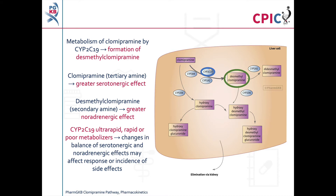In CYP2C19 ultra-rapid, rapid, or poor metabolisers, there can be changes in the balance of serotonergic and noradrenergic effects, with greater noradrenergic effects in ultra-rapid and rapid metabolisers, and greater serotonergic effects in poor metabolisers. This may affect response or incidence of side effects.